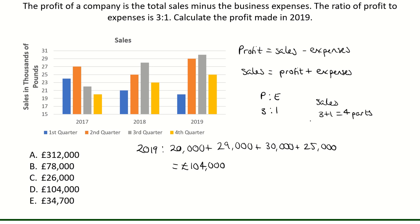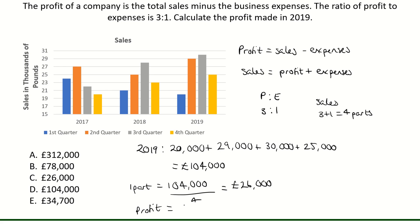Now we want to get the profit. The sales represents the four parts, so to find one part we need to divide by four. So 104,000 divided by four gives us 26,000 pounds. This value here represents one part. If we were asked to find the expenses, then that would be our answer, but we want the profit, which is three parts. So to find the profit, we need to do three times 26,000, which gives us 78,000 pounds.